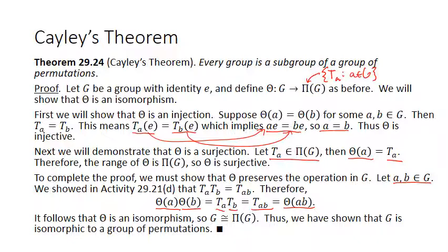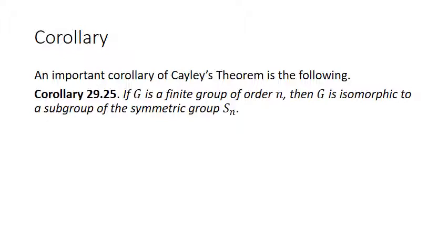Pi(G) represents some of the ways of permuting the elements of G — not all ways. All ways of permuting elements of G would be the symmetric group S_n, where n is the number of elements in G. Corollary 29.25: if G is a finite group of order n, then G is isomorphic to a subgroup of the symmetric group S_n. That finishes Investigation 29.